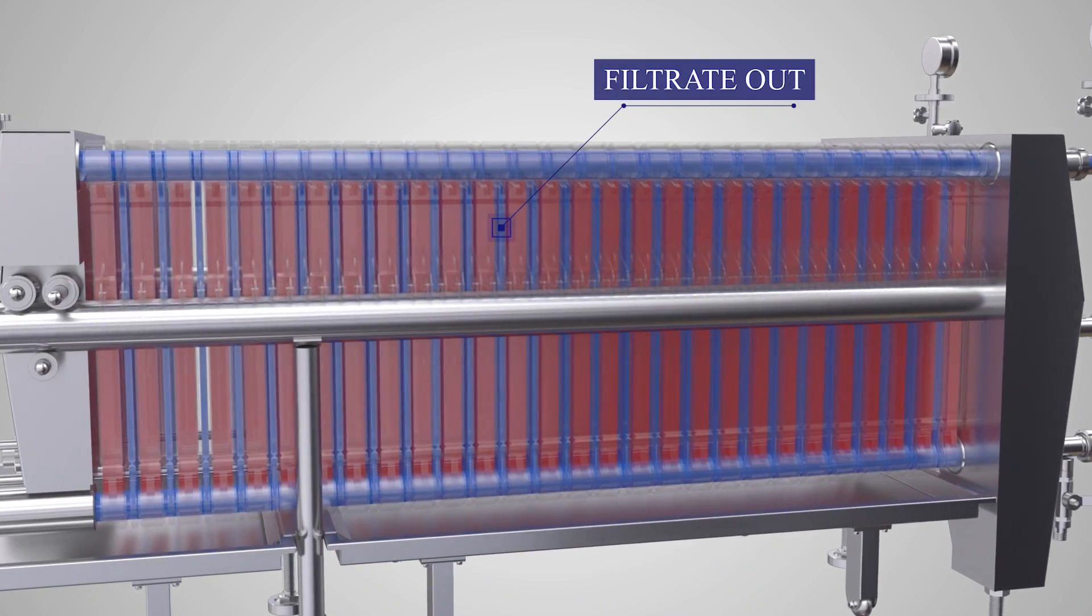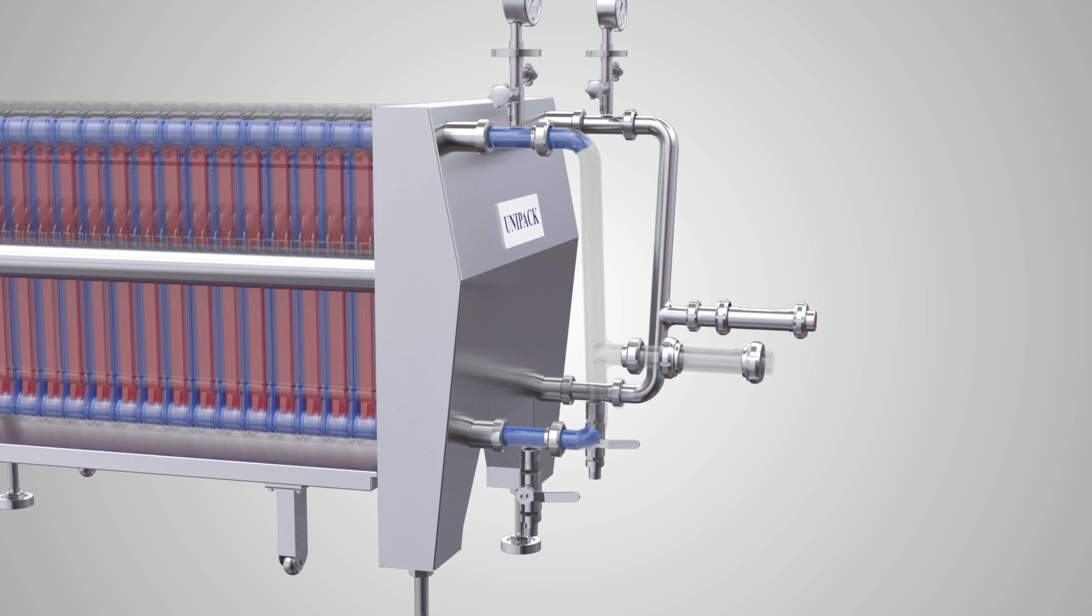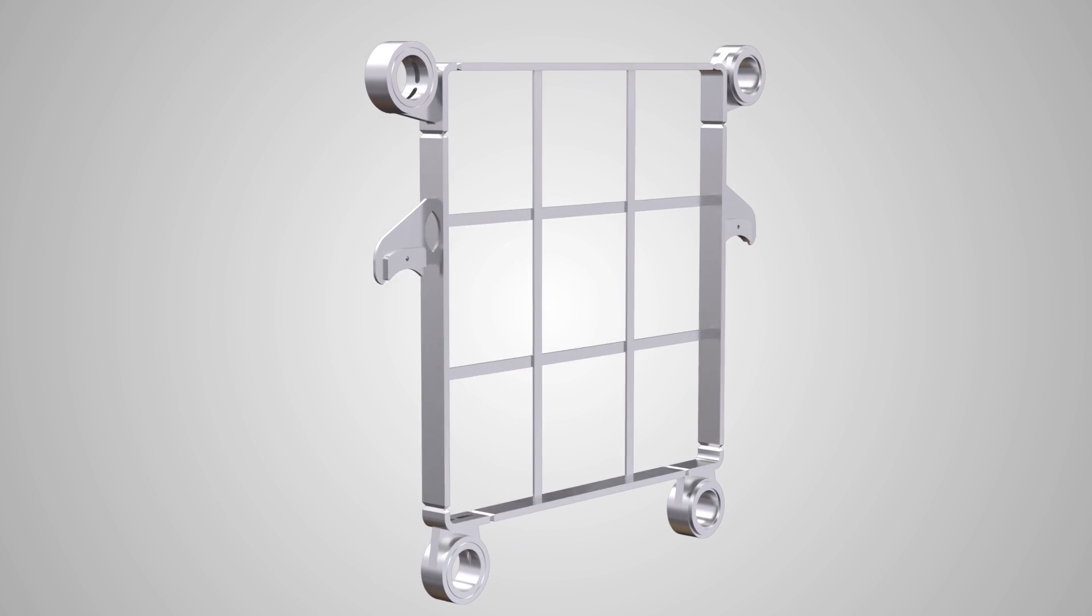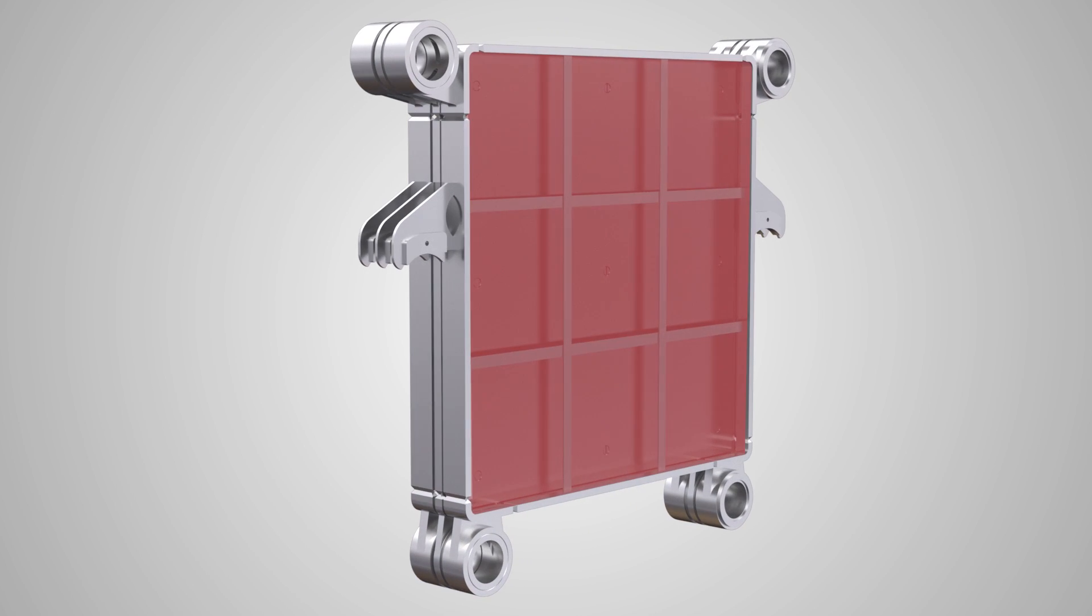The air vent helps avoid any air contamination as well as effective pressure development. The impurities are retained in the form of a cake on the sides of the frames.